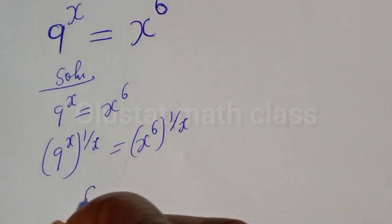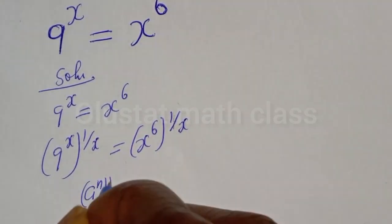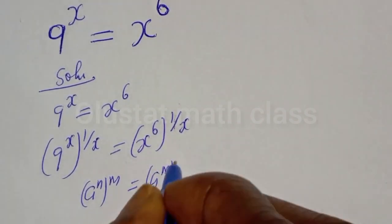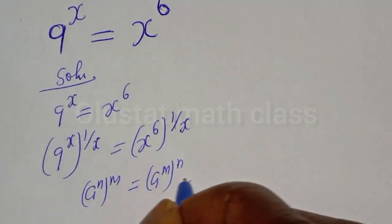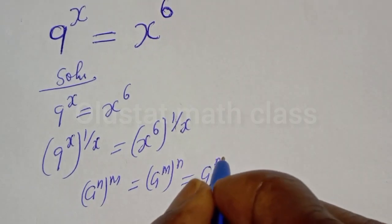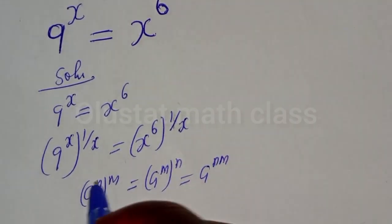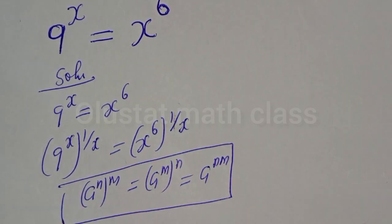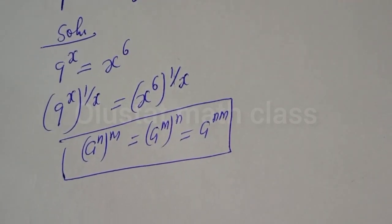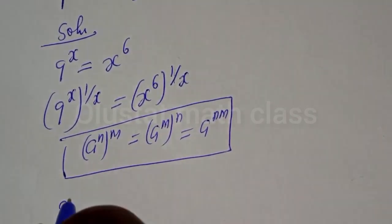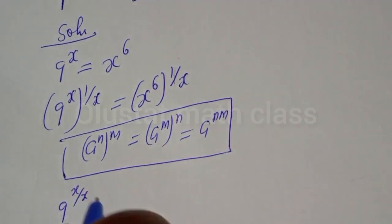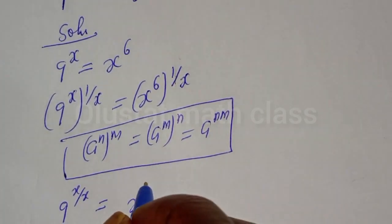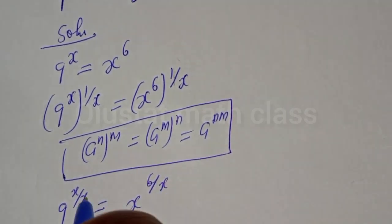If you have a raised to power n, to the power of m, this is equal to a raised to power m, to the power of n, which equals a raised to power n times m. Then here, 9 raised to power x over s is equal to s raised to power 6 over x.